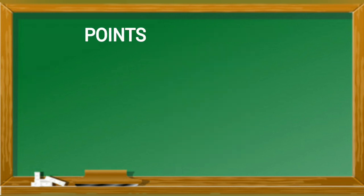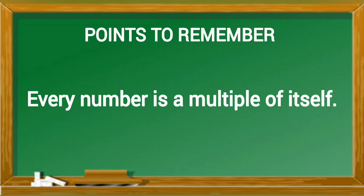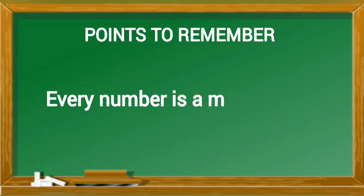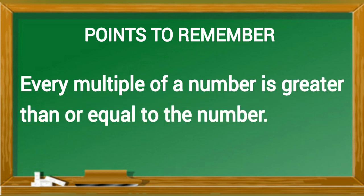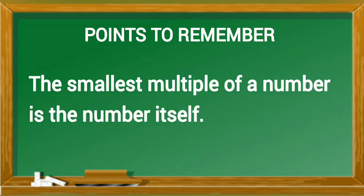Points to remember: Every number is a multiple of itself. Every number is a multiple of 1. Every multiple of a number is greater than or equal to the number. The smallest multiple of a number is the number itself.